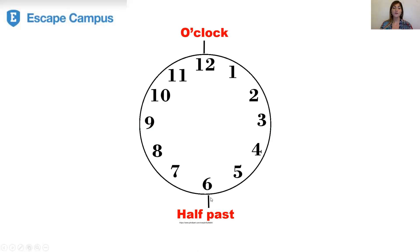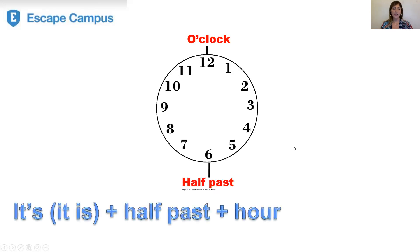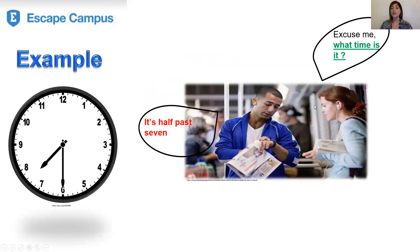Then we have half past. If the long hand is on number six, we say: it's plus half past plus the hour. This time we use first half past and then the hour. For example: 'What time is it?' 'It's half past seven.' The long hand is on number six — half past. It's half past seven.